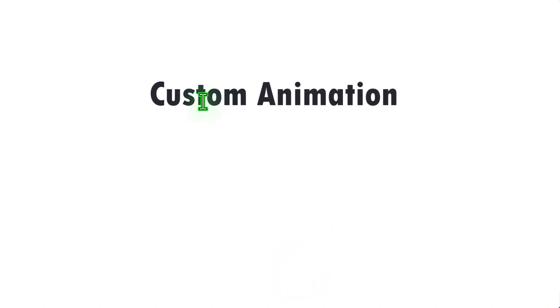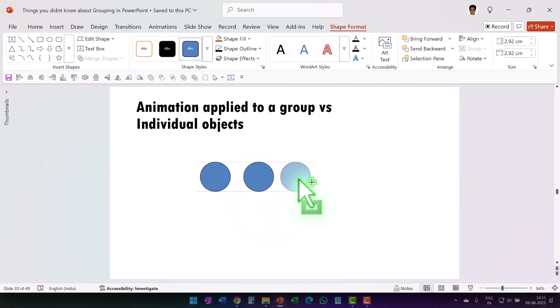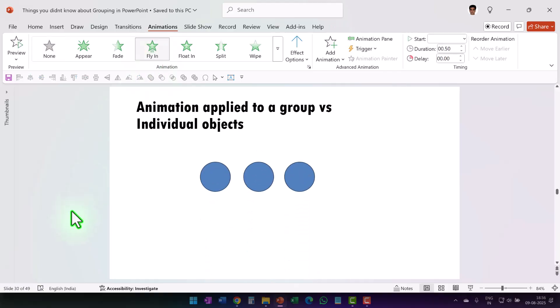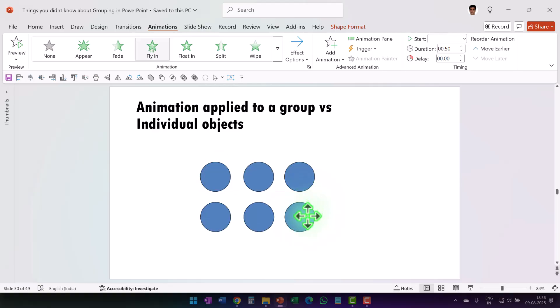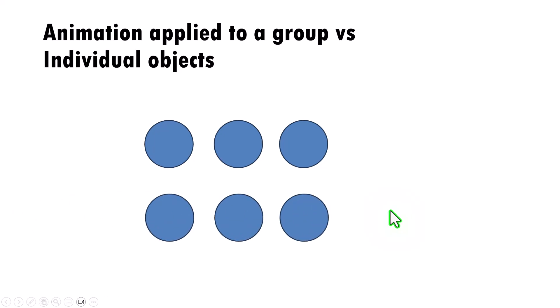Let us start by understanding how custom animation applies to a group and to individual objects. Let us add a few circles so we can understand the difference. So we have got three circles. Now let us select all three of them. Let us apply animation — this time I'm going to apply fly-in animation and change the direction from left. Now observe the way the objects appear on screen. Can you see each of these objects come at different times, even though they are all coming with previous? That is because of the distance difference.